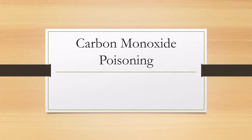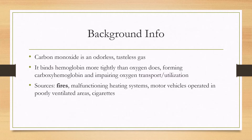Let's talk about carbon monoxide poisoning. Carbon monoxide is an odorless, tasteless gas. The pathology comes from it binding hemoglobin more tightly than oxygen does, forming carboxyhemoglobin. The hemoglobin is then no longer binding oxygen, which impairs oxygen transport and utilization. The most common source is a house fire, but malfunctioning heating systems, motor vehicles operated in poorly ventilated areas, and chronic cigarette smoking can also elevate carboxyhemoglobin levels.